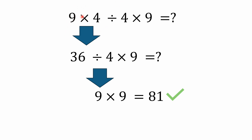You have your multiplication first, which is 9 times 4. 9 times 4 is 36. Moving left to right, you then have division, so 36 divided by 4 is 9. Then you see multiplication again, so you would have 9 times 9 equals 81. That's following the order of operations — your BODMAS or PEMDAS.